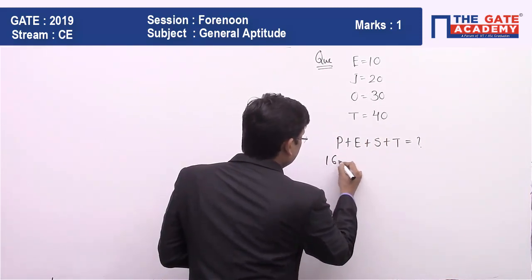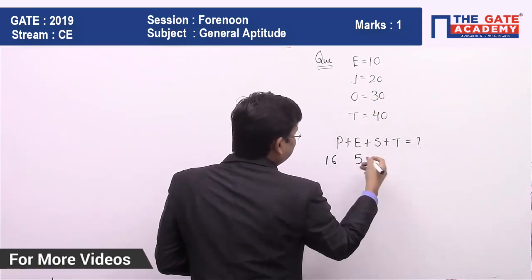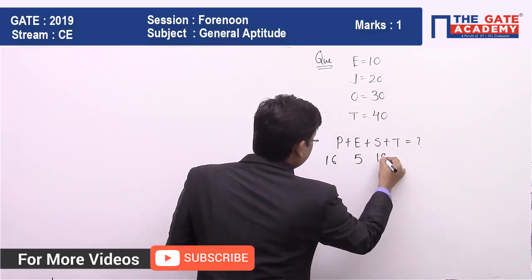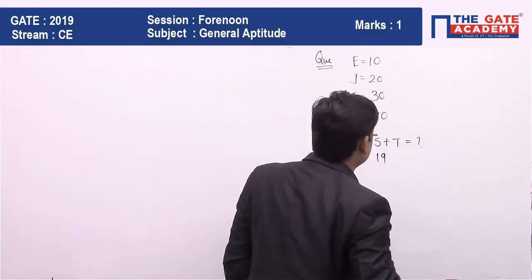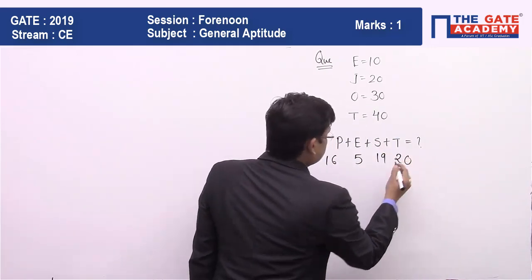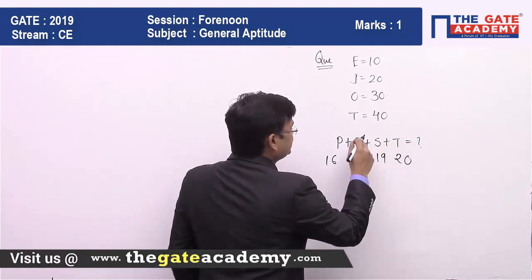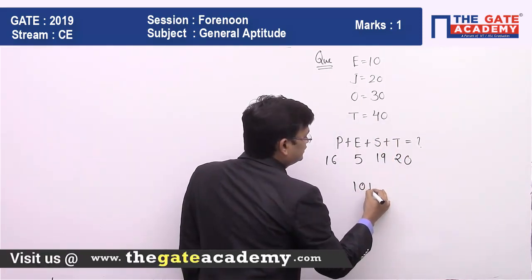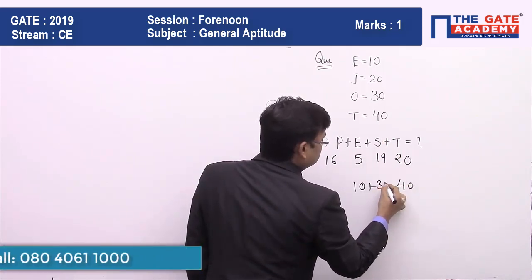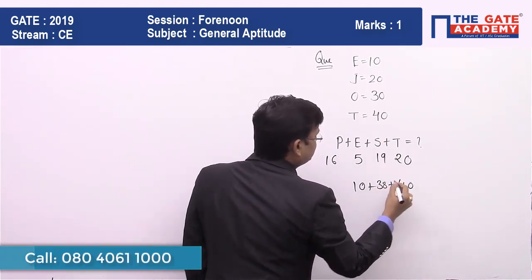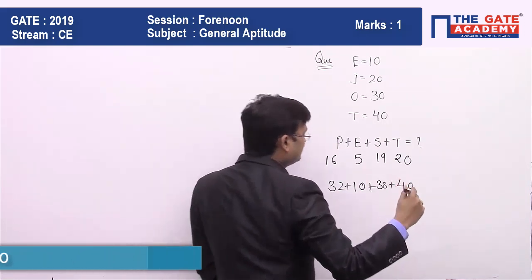p is the 16th alphabet so its value is 32. e is the 5th alphabet, already given as 10. s is the 19th alphabet so its value is 38. t is the 20th alphabet so its value is 40. These three — e, s, and t — are straightforward once you know the logic.